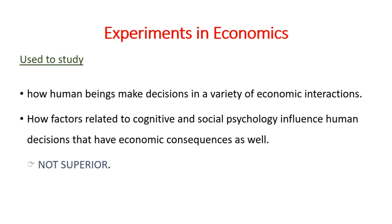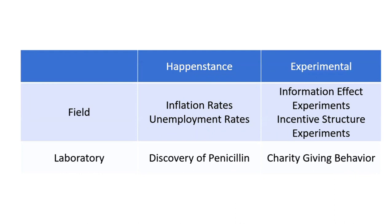Both the field and laboratory produce both kinds of data we call happenstance data and experimental data. For example, if we want to know the GDP, inflation rate, or unemployment rate, these numbers will be based upon happenstance data collected from the field. However, if we want to see how a specific kind of incentive structure changes the worker's behavior, we have to take experimental data. The same is the case with the lab.